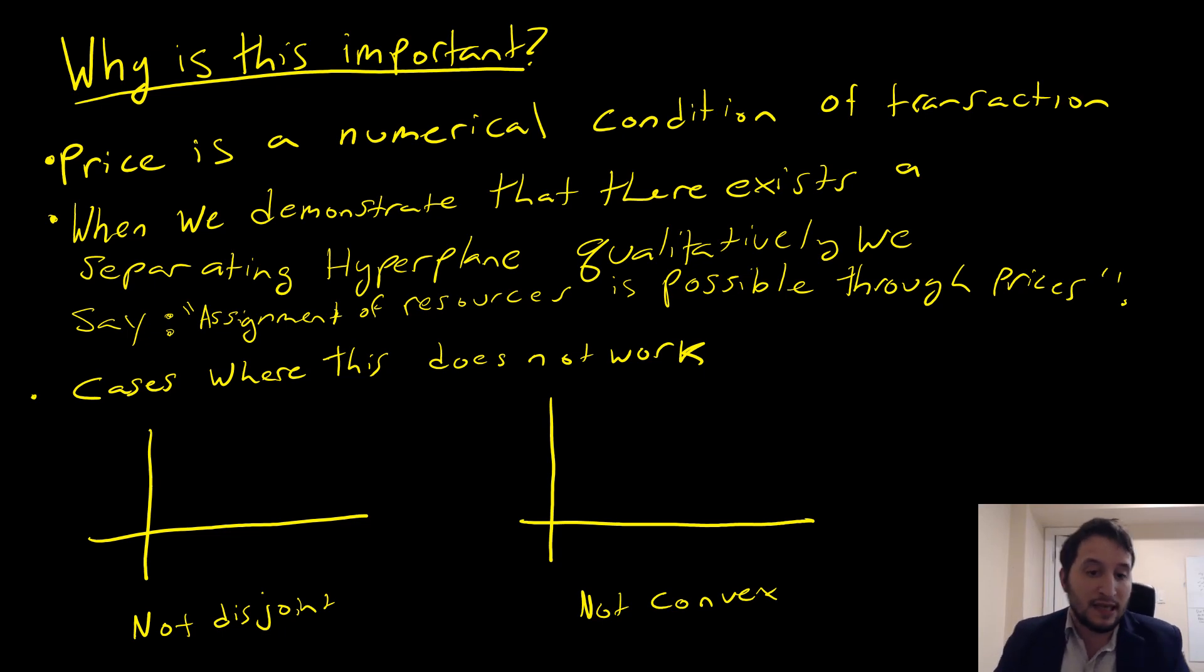When we demonstrate that there exists a separating hyperplane, qualitatively speaking, we say that the assignment of resources is possible through prices. That's what we're saying. So let's talk about cases where this does not work.